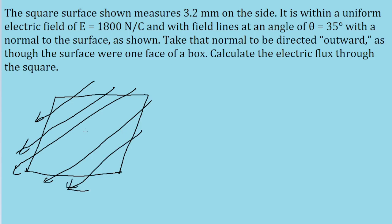This square surface also has a normal vector. The problem asks us to assume it points outwards, as though the surface were one face of a box.